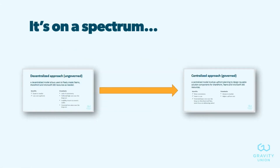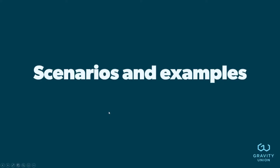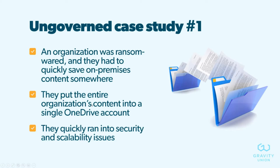It's worth mentioning this is on a spectrum — it's not black and white. You can have a bit of a decentralized approach on some things and centralized on others. Generally though, organizations will pick a path, and we want to talk about nudging more towards the governed approach and the benefits that involves. With that, I'll hand it back to Michael to walk through some stories and scenarios.